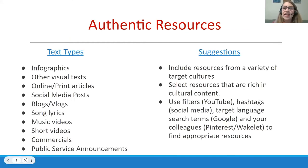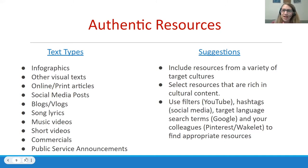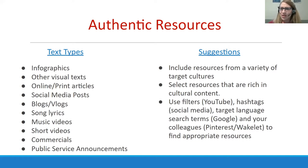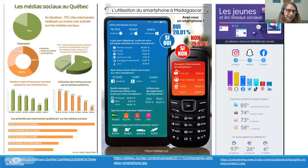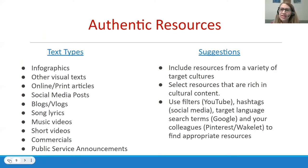Before starting on our mission of creating the unit, we need authentic resources. For Checkpoint B students, great types of authentic resources include infographics, visual texts, articles — online or print — social media posts, blogs, song lyrics, music videos, short videos, commercials, and public service announcements. A few suggestions for curating: include resources from a variety of target cultures, choose resources rich in cultural content, and use filters — like YouTube's under-four-minutes filter.